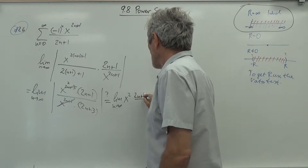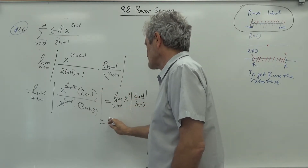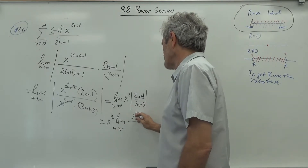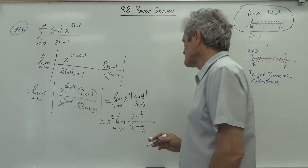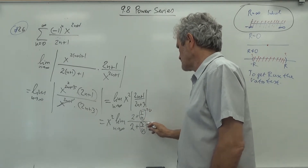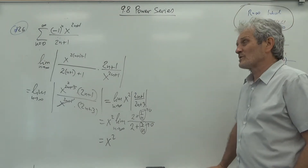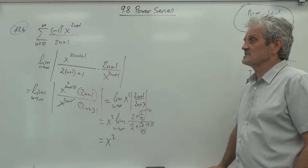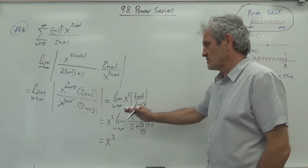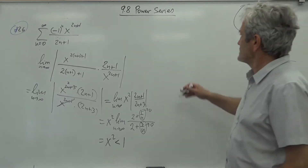Dividing numerator and denominator by n gives (2 + 1/n)/(2 + 3/n), which approaches 2/2 = 1. So the overall limit is x^2. For convergence, we need x^2 less than 1, which means x is between -1 and 1.